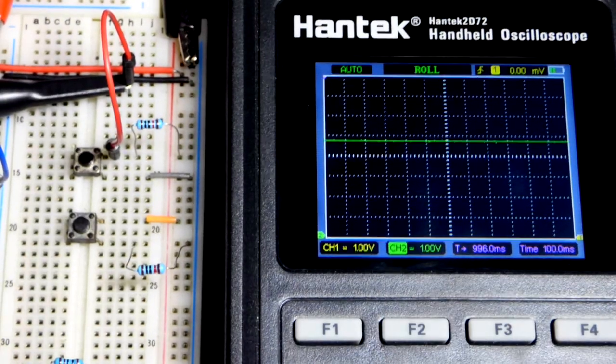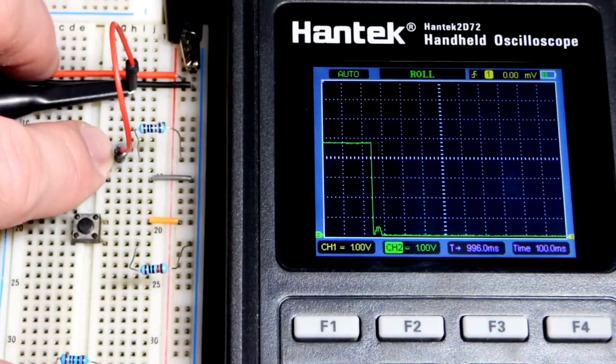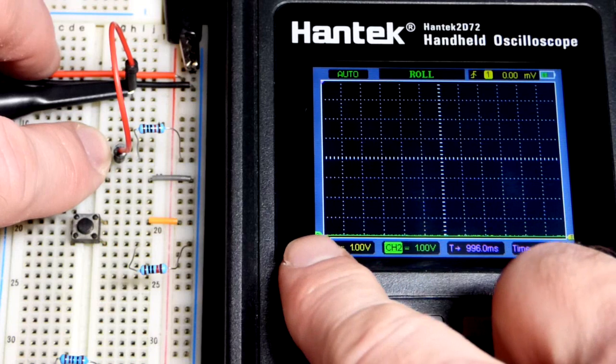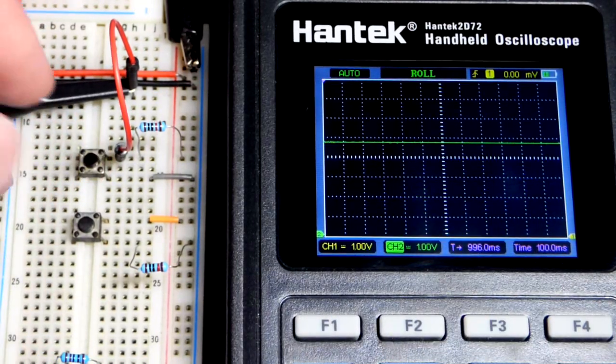Not lining up perfectly, but that is 5 volts there. And when I press the button, you can see it drops to 0 volts. That's where I set 0 volts for channel 2, the green line right there.